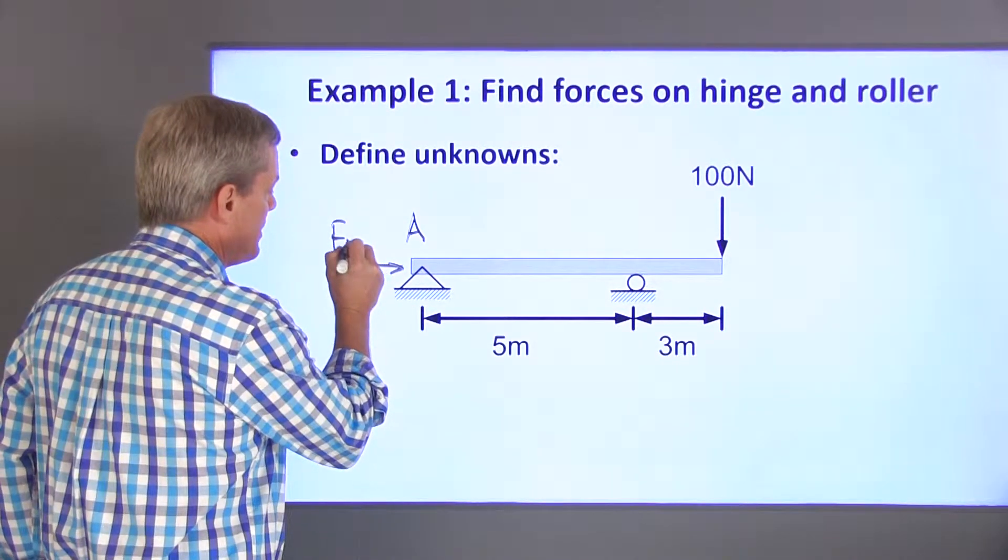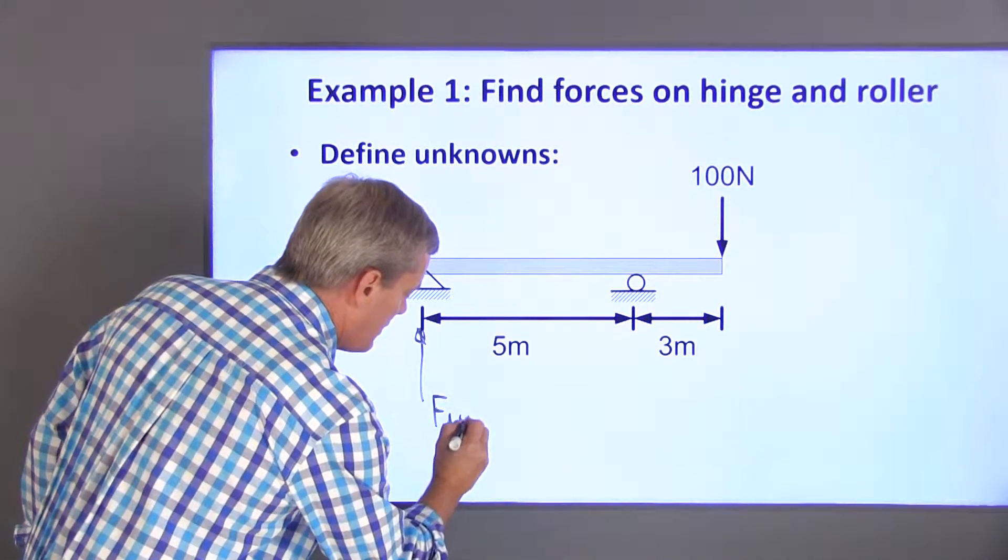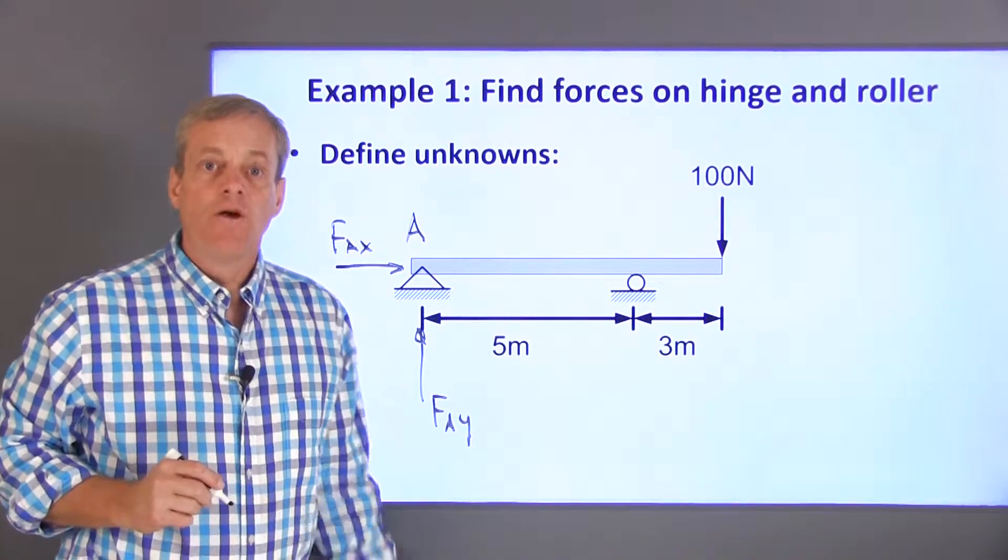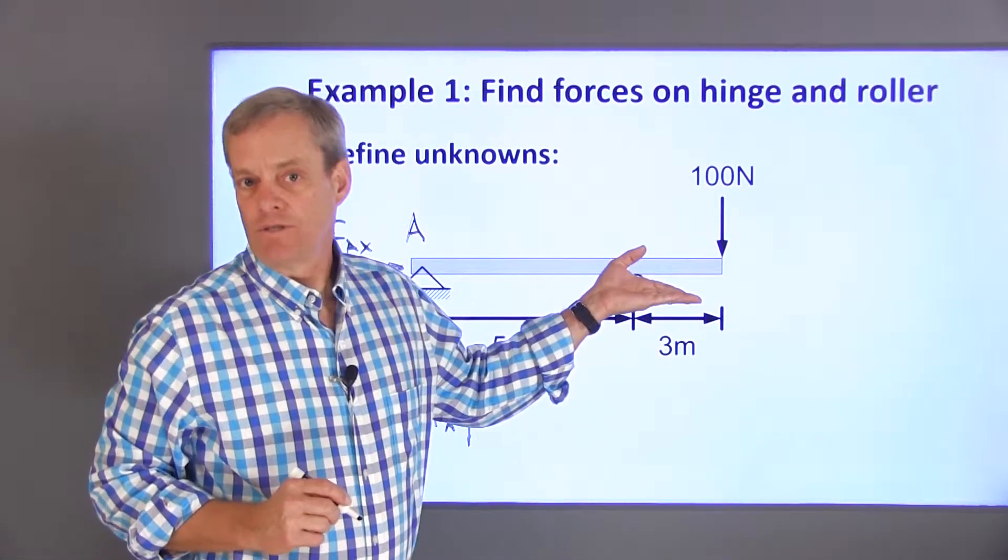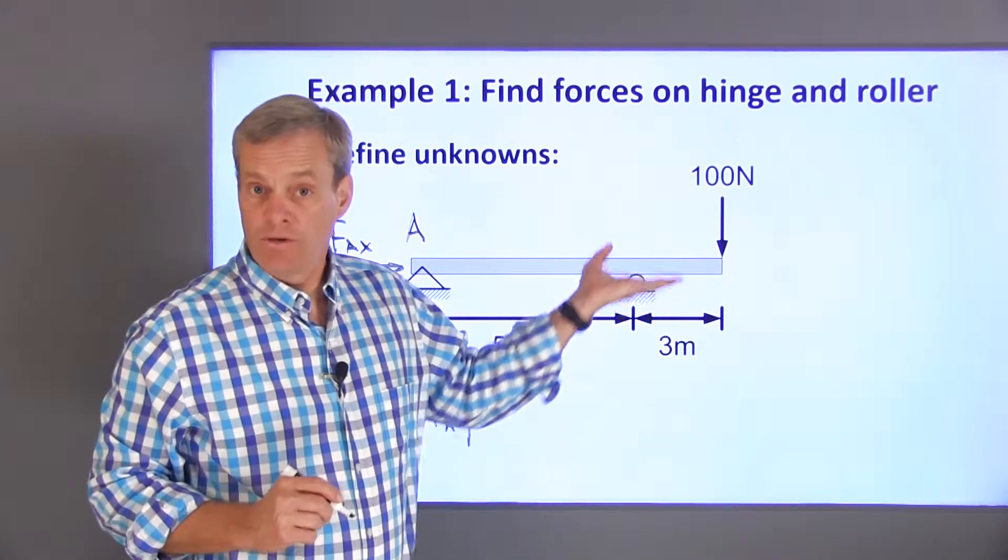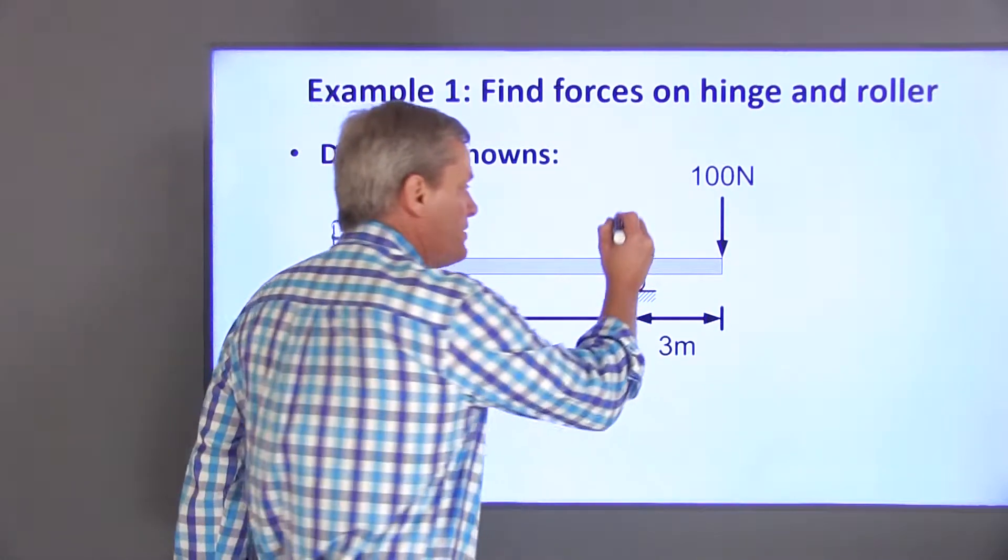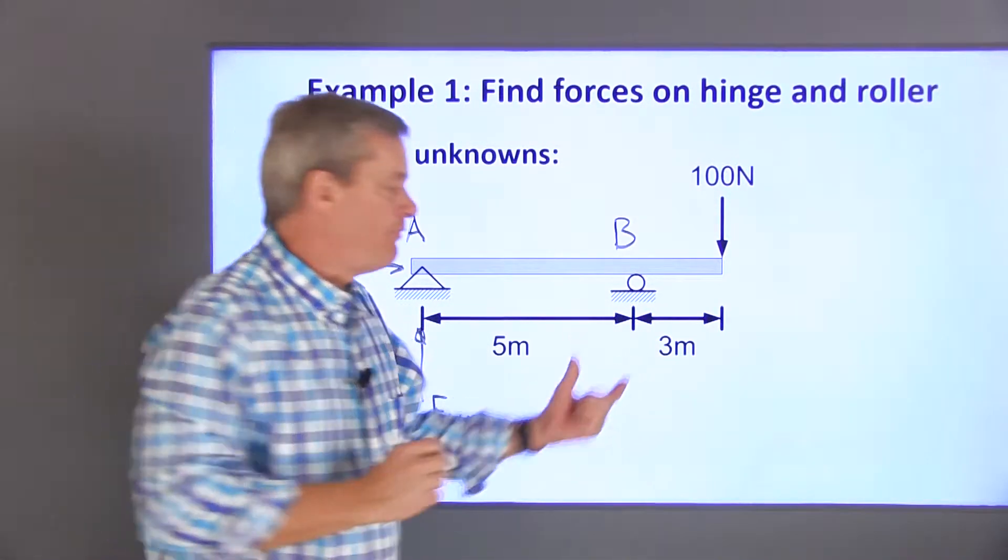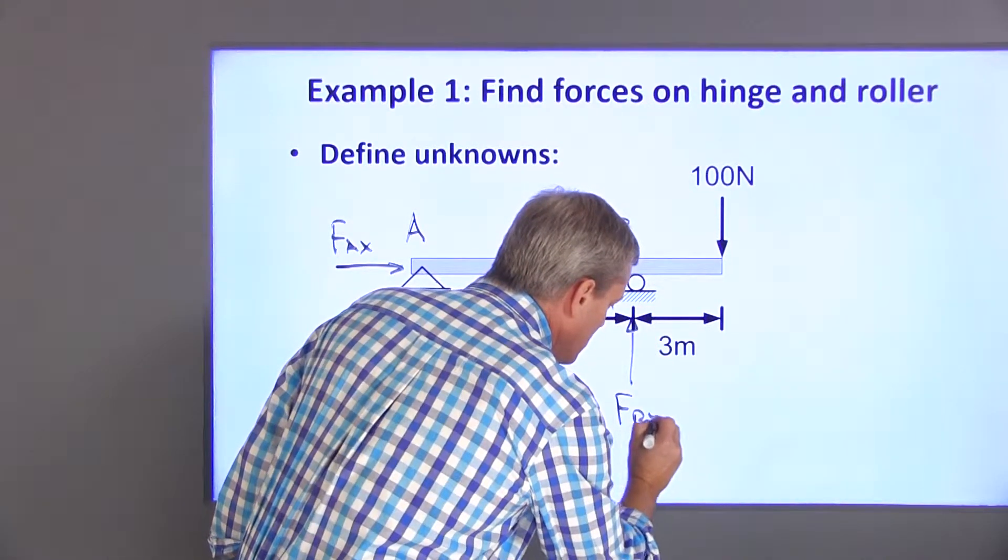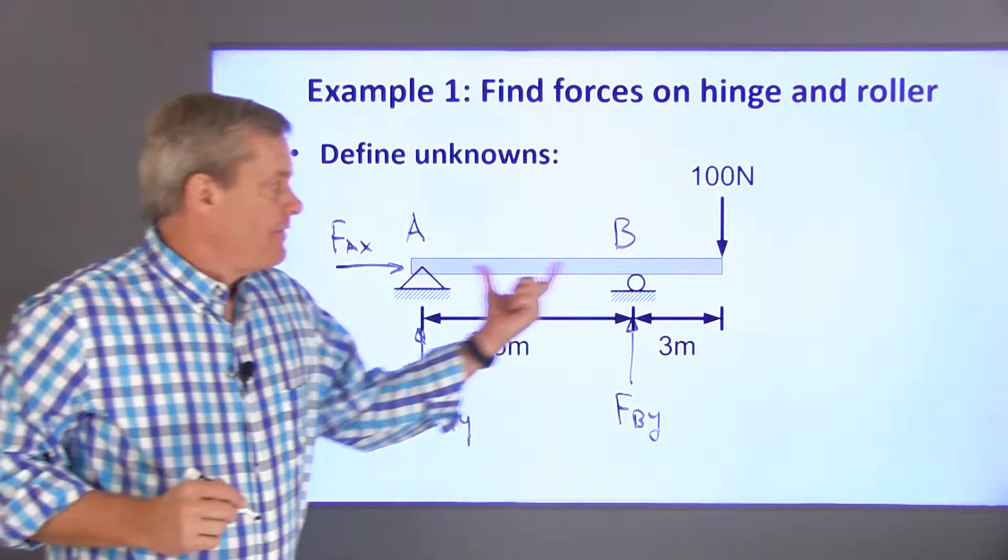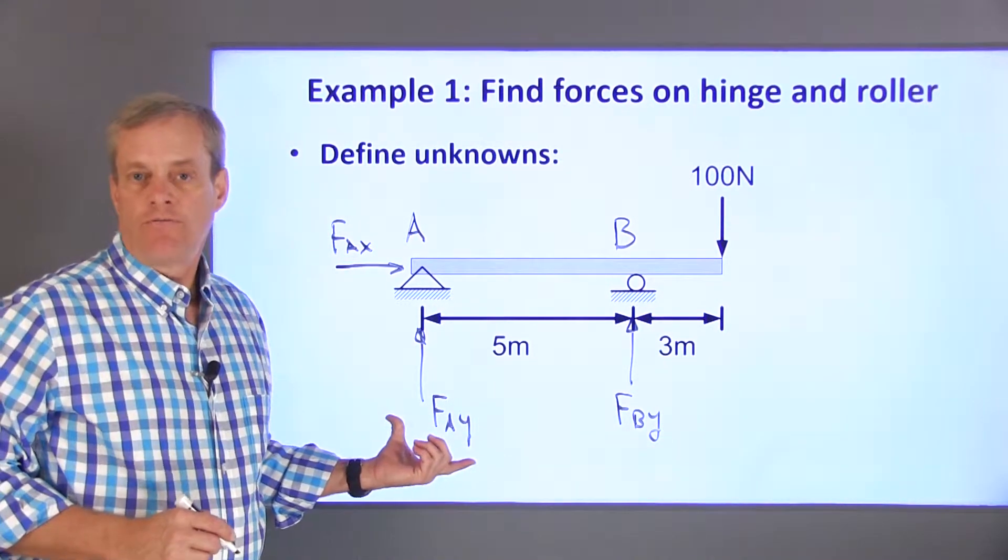I'll call this end point A and I'll define two unknown forces in two directions. FAX will be the horizontal force and FAY will be the vertical force at point A. The roller will support a vertical force, but not a horizontal force. This is similar to riding a skateboard. It'll hold you up, but it won't keep you from moving sideways. I'll call this point B and I'll define a vertical force FBY at this point. The system has three unknowns, so next I need to write three equations to solve for those unknowns.